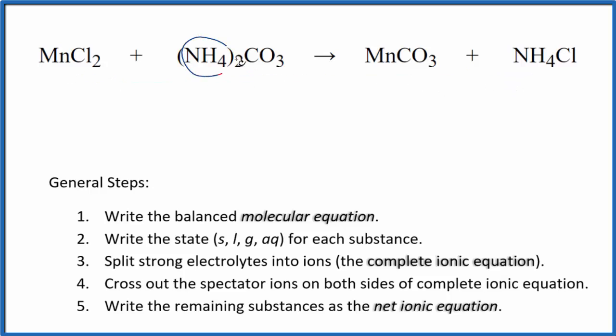I can see that I have two of these ammonium ions here, and then just the one here. So I'm going to put a two in front of the ammonium chloride. Balances the ammonium ions, two chlorides, two chlorides, one manganese, one manganese, and we have a carbonate here and here. This is the balanced molecular equation.